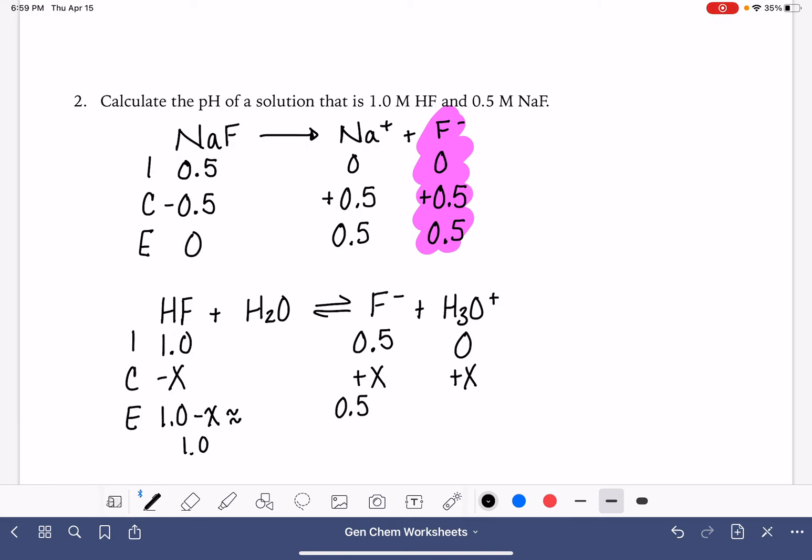For fluoride, we have 0.5 plus X because we're just doing the math down in this column. And again, same thing. We're going to assume that X is really small, so this is just going to be 0.5. And for H3O plus, it's going to be X.